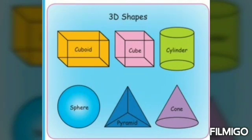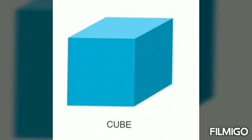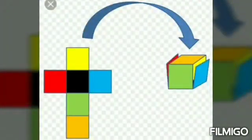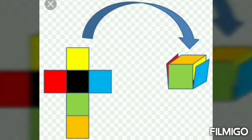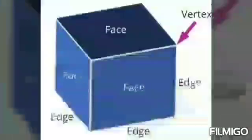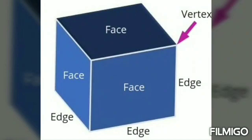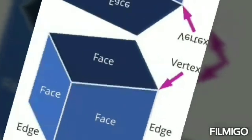Now, we see the constructions of 3D shapes. First, we see about cube. Cube is a solid shape made of squares. It has 6 faces, 12 edges and 8 vertices.